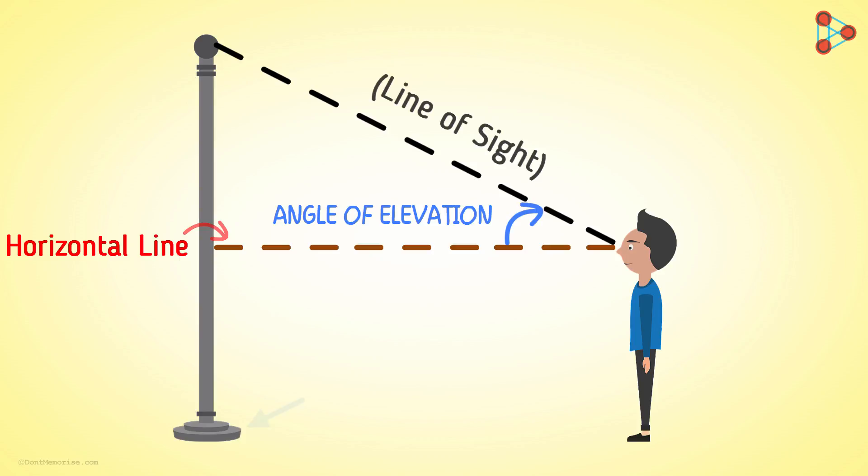What if the person is looking at the base of the pole? What is the line of sight in this case? The line drawn from the eye to the base of the pole is the line of sight when the person is looking at the base. In this case, the angle formed between the line of sight and horizontal is called the angle of depression.